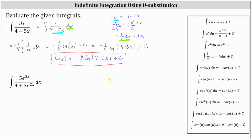Looking at our second example, both the numerator and denominator contain e to the power of 2x, but the denominator is a sum where one of the terms is a constant, and therefore the derivative is going to fit the form of the numerator. We will let u equal the denominator, 4 plus 3 times e to the power of 2x. Now we determine du: du is equal to the derivative of 4 plus 3 times e to the power of 2x times dx, which gives us 0 plus 3 times e to the power of 2x times 2, or 6 times e to the power of 2x times dx.